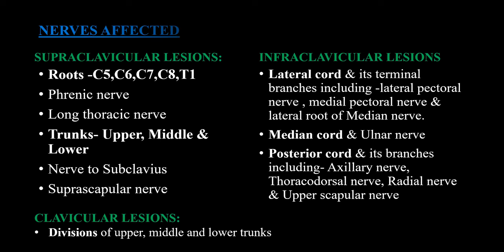Let's discuss which nerve fibers are routinely affected in case of any lesion. If the lesion is supraclavicular, then C5, C6, C7, C8, and T1 roots are mainly involved, along with the phrenic nerve, long thoracic nerve, and the upper, middle, and lower trunks, as well as the subclavius and suprascapular nerve. If there is a clavicular lesion, then division of the upper, middle, or lower trunk is included. In infraclavicular lesion cases, they involve the lateral cord and its terminal branches like the lateral pectoral nerve, medial pectoral nerve, lateral root of the median nerve, median cord, ulnar nerve, posterior cord and its branches.